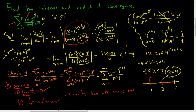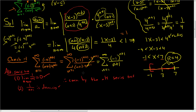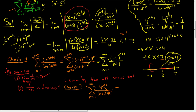Now let's check x equals 7. We replace x with 7 in our infinite series: 7 minus 3 is 4, giving 4 to the n plus 1 over (n plus 1) times 4 to the n plus 1. The 4 to the n plus 1 terms cancel, leaving the sum as n runs from 1 to infinity of 1 over n plus 1.